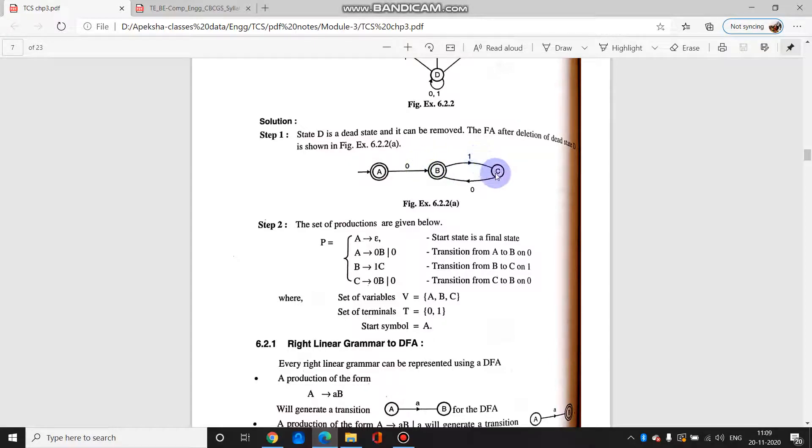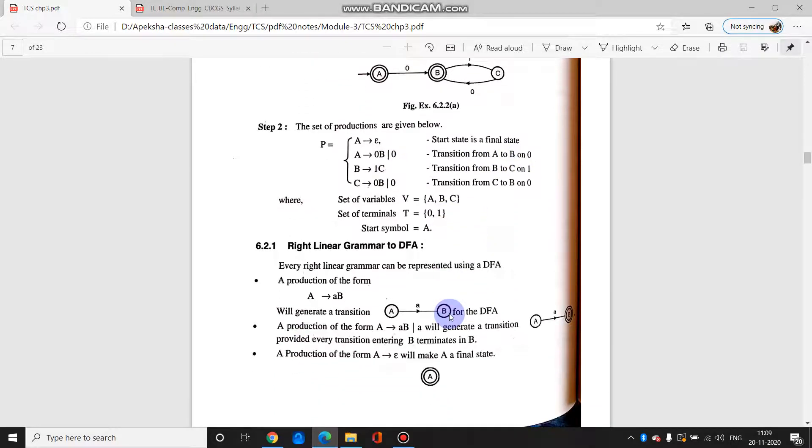Then also a gives zero b. Right linear means the non-terminal is on the right hand side, so it is zero b. Then from a there are no more productions. Now we will go to b. From b we are getting one c, so it is one c. And from c we are getting zero b, that's it. And from c we are also getting zero, that's it. So this is how we convert DFA to right linear grammar.